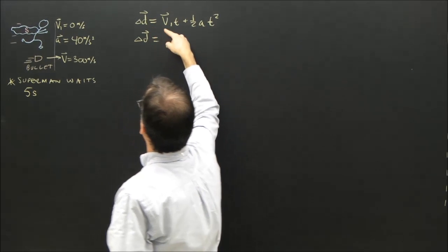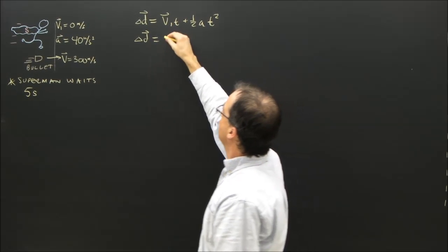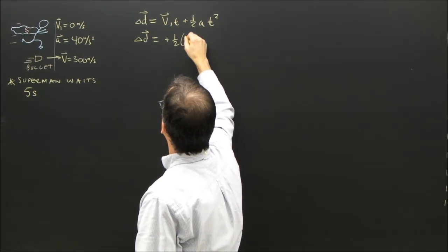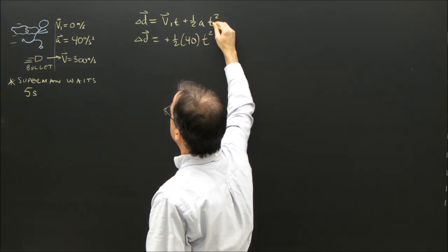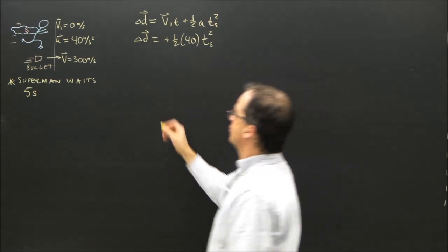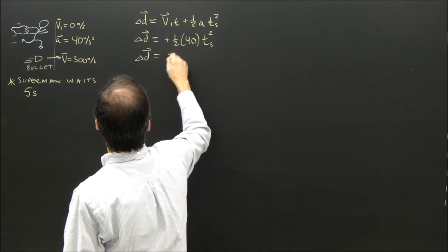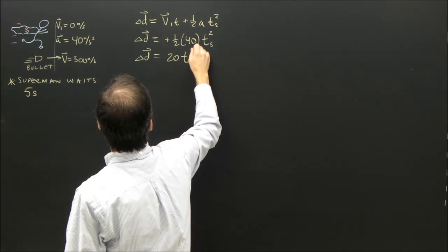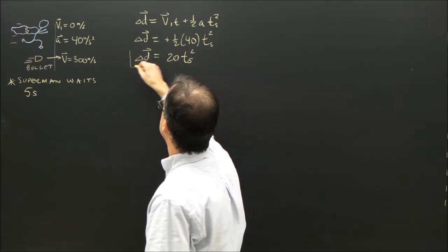So let me put this in. Superman's position is, well, V1 is zero. He starts from rest. So that's zero. Plus 1/2 times 40 T squared. And this is the time of Superman. So Superman's position is always described as 20 time of Superman squared. This is the equation that governs his motion.